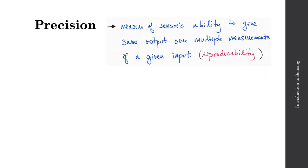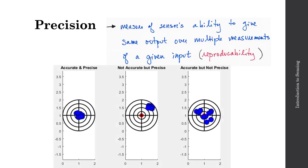Now precision and accuracy, these are two terms that are often confused. Precision refers to a measure of a sensor's ability to give the same output over multiple measurements of a given input. You can also think of precision as reproducibility of a sensor. A traditional way of explaining accuracy and precision is to look at this target example. Let's take a look at this example, let's animate this in MATLAB.